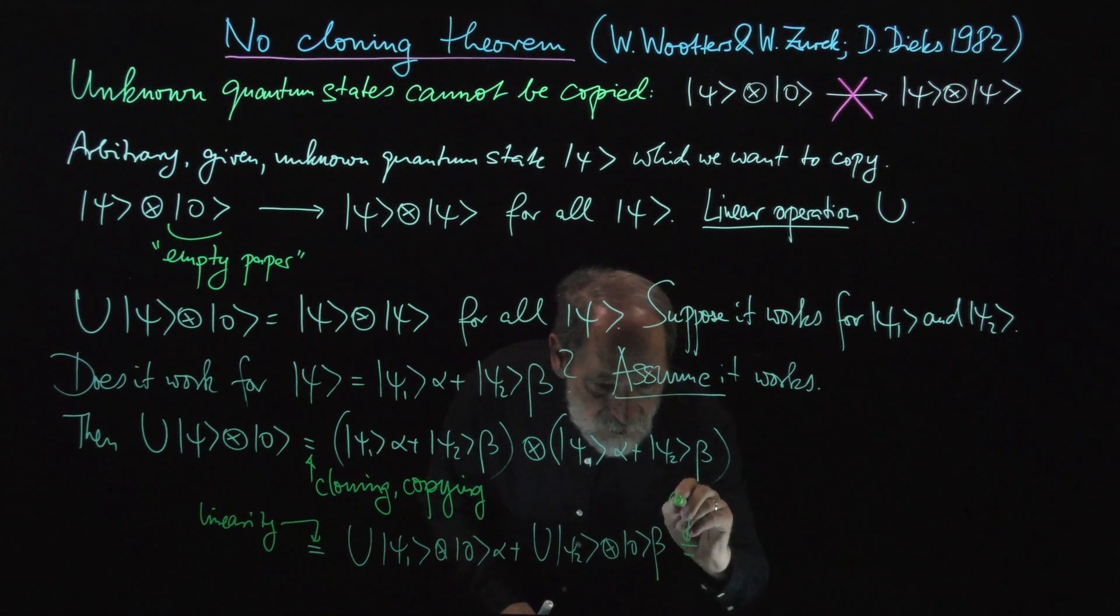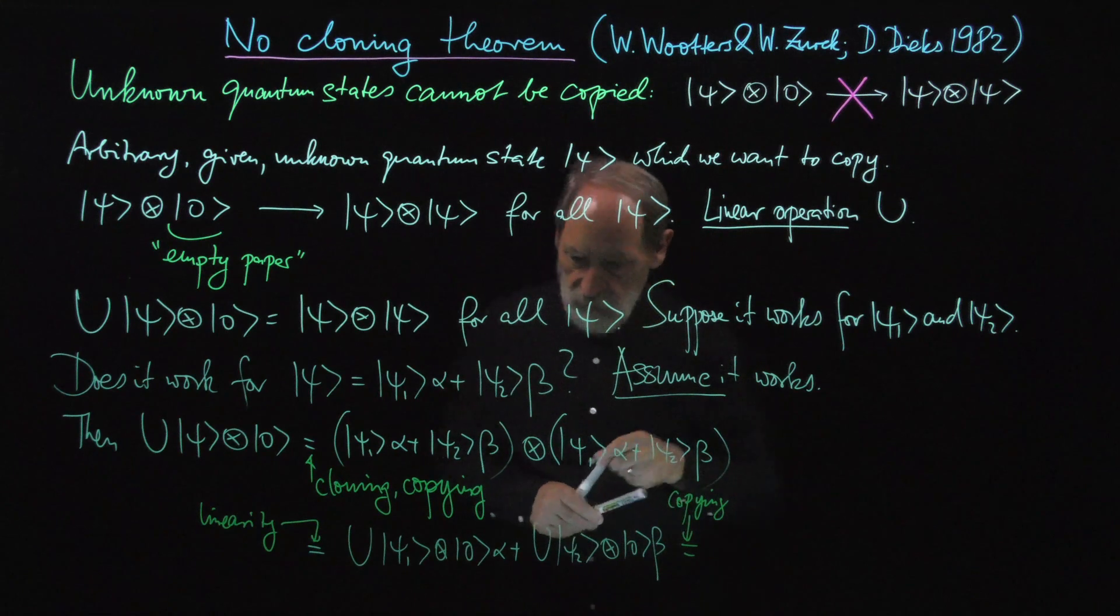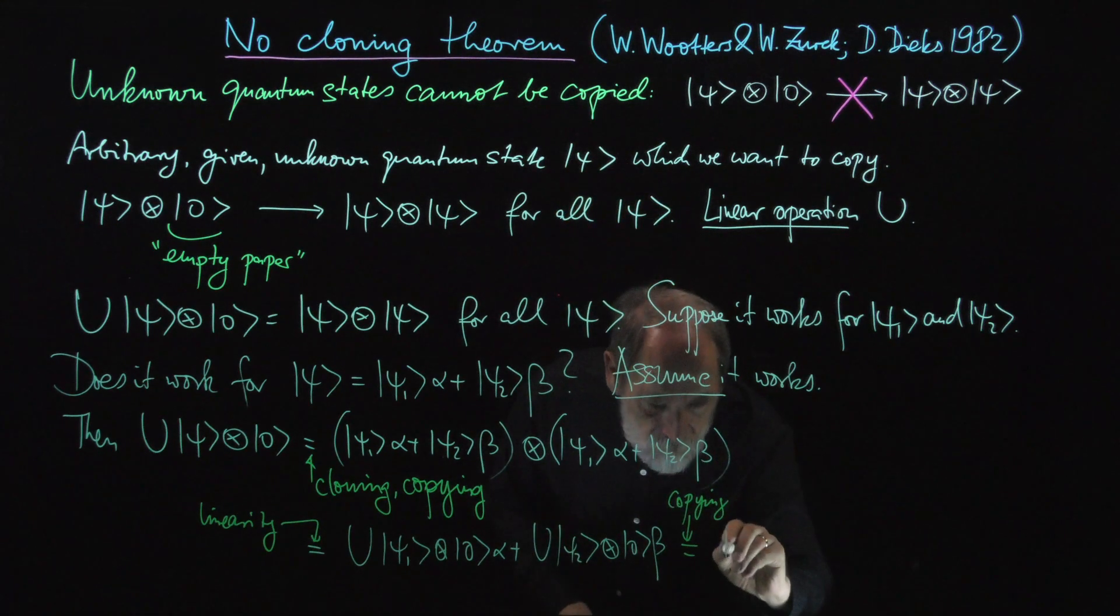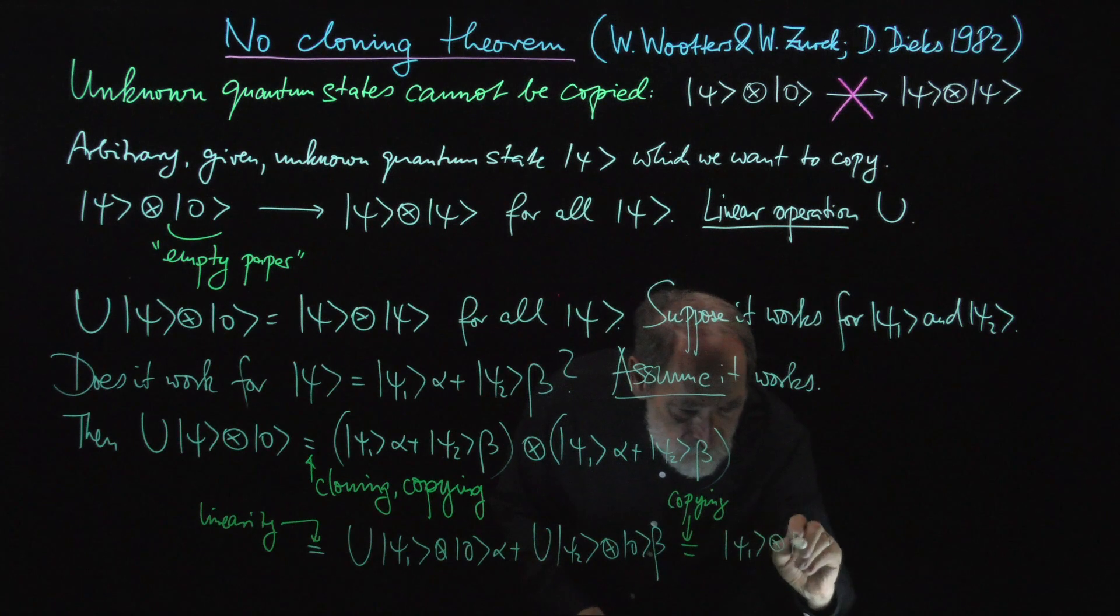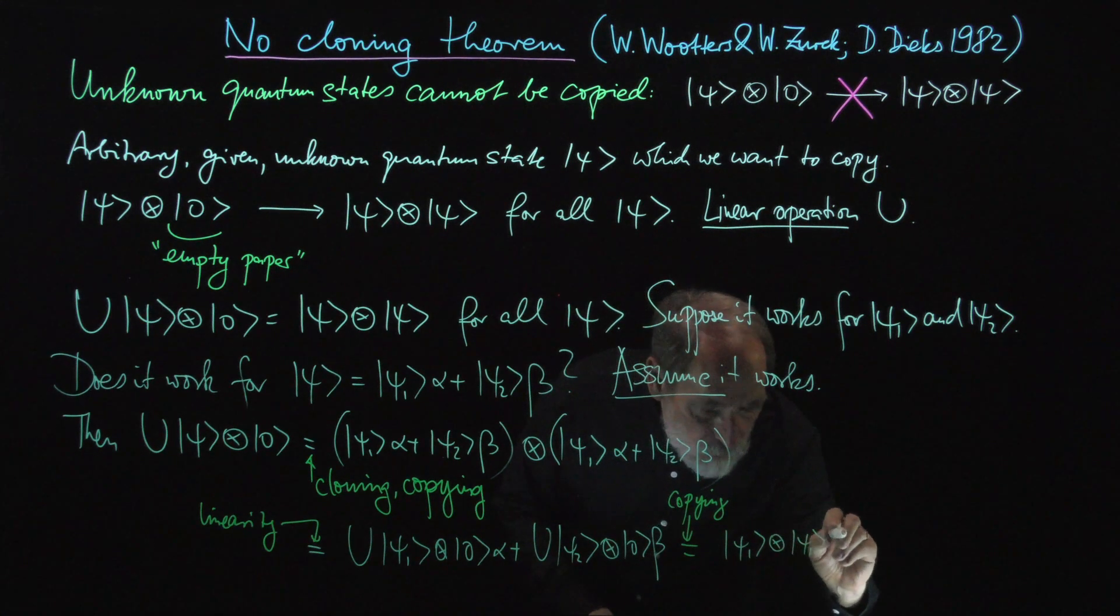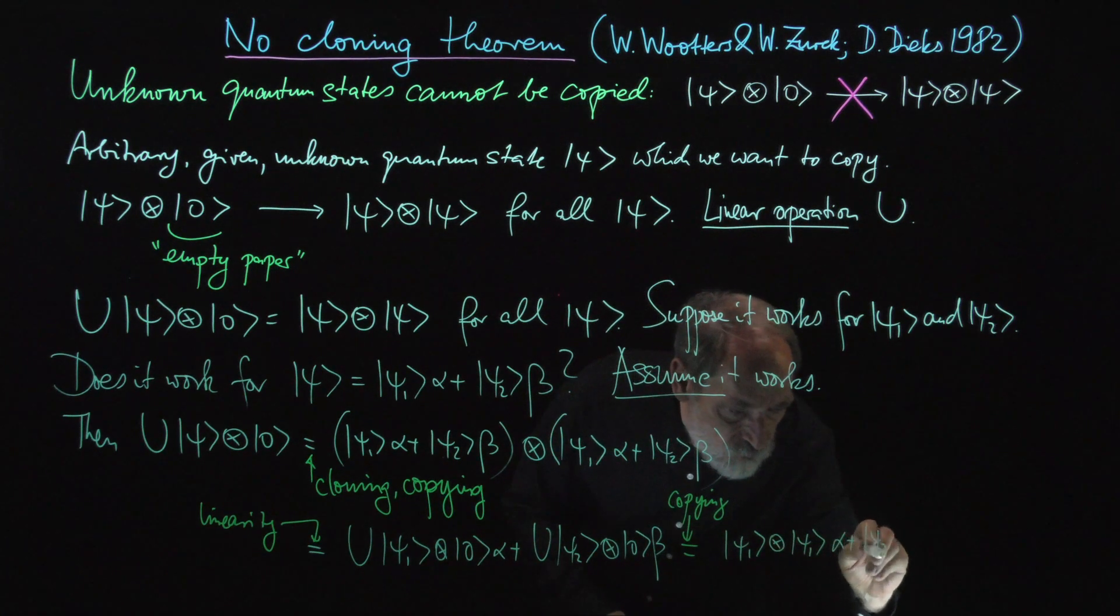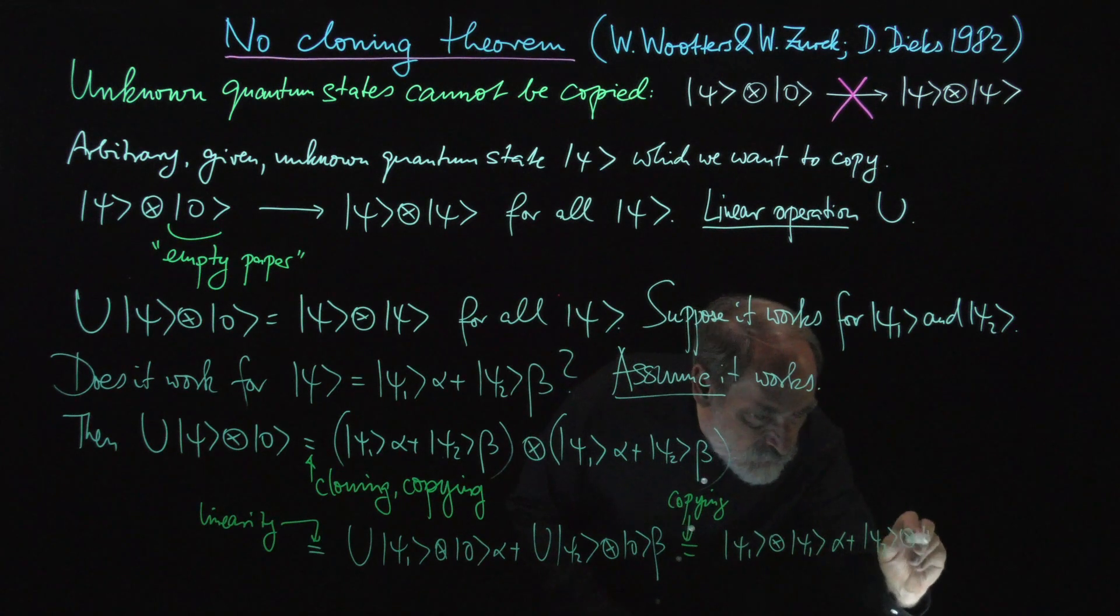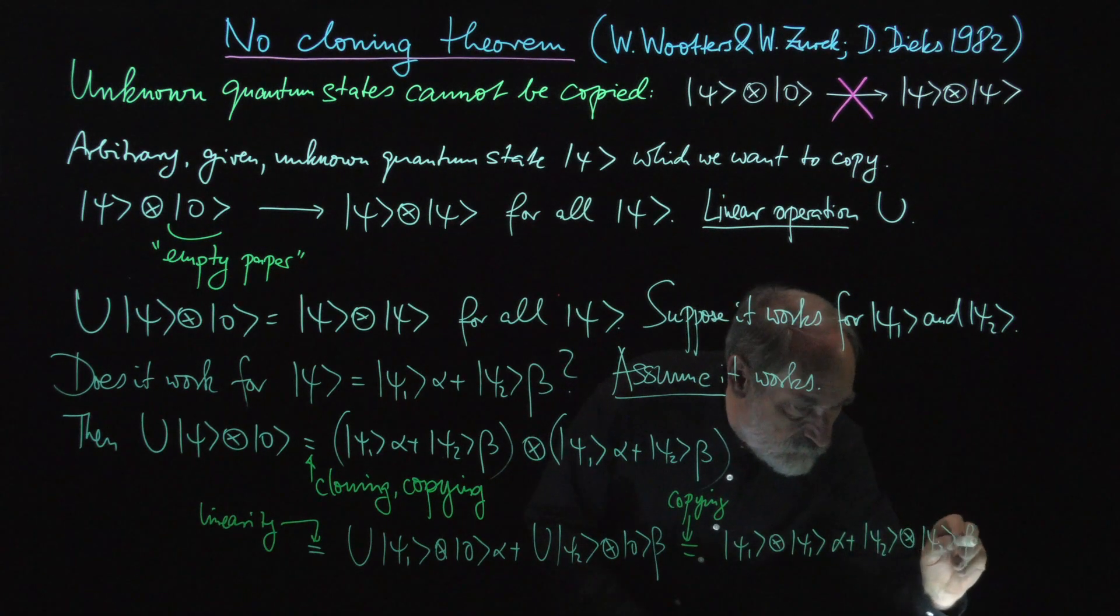So this is again about the copying. And what we get is psi one tensor psi one alpha plus psi two tensor psi two beta.